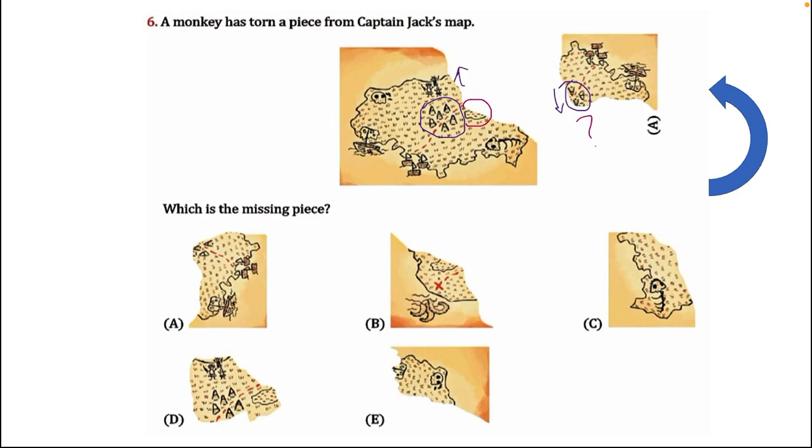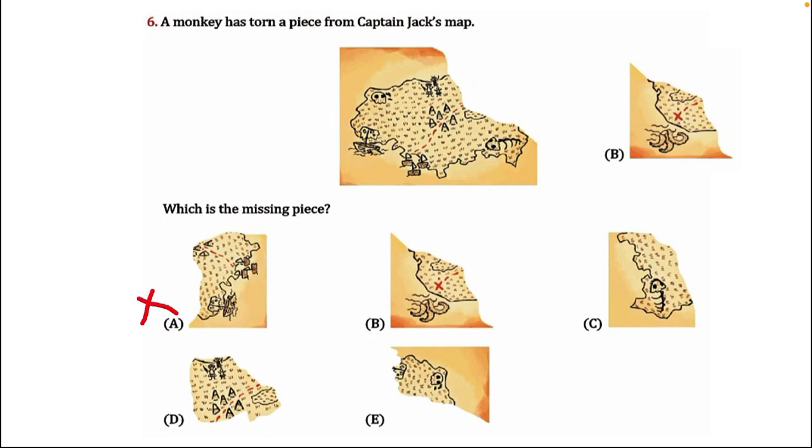The next thing is that the oval on the map is half, however there is no other half on option A. That is why option A is incorrect. Let's take option B.